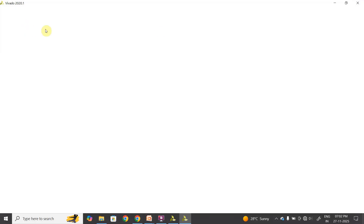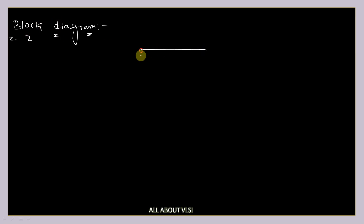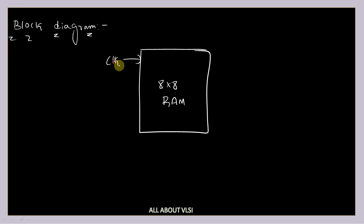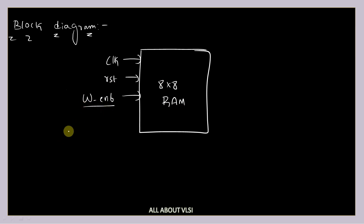Let us see the block diagram of this design. The block diagram of a simple 8x8 RAM has clock as one input because it is a sequential circuit, followed by reset, and a write enable signal for performing the write operation. Whenever write enable is equal to 1, we can write data into the RAM. If it is equal to zero, we cannot perform any write operation.